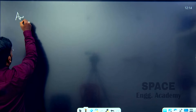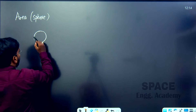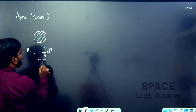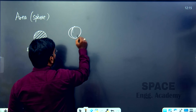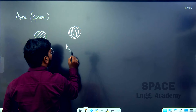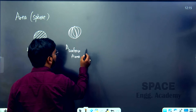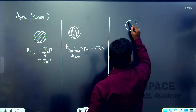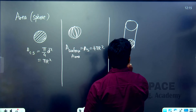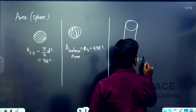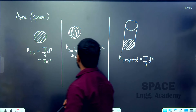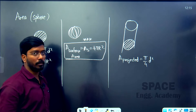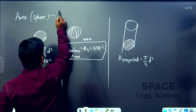Next, the area of a sphere. For a sphere, the cross-sectional area is (π/4)d² or πr². The surface area of a sphere is 4πr². The projected area of a sphere is again a circle, so it equals (π/4)d² — the same as the cross-sectional area. The key formula to remember for a sphere is the surface area: 4πr².